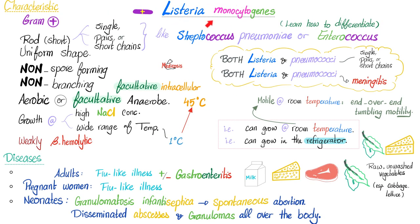The characteristics of Listeria monocytogenes were discussed in the previous video. Just remember, it can grow and multiply at a wide range of temperatures — from cold to warm. It can grow in a refrigerator. The longer you refrigerate your food, the greater the chance of replication, because the bacteria survives in your fridge for a longer period of time.